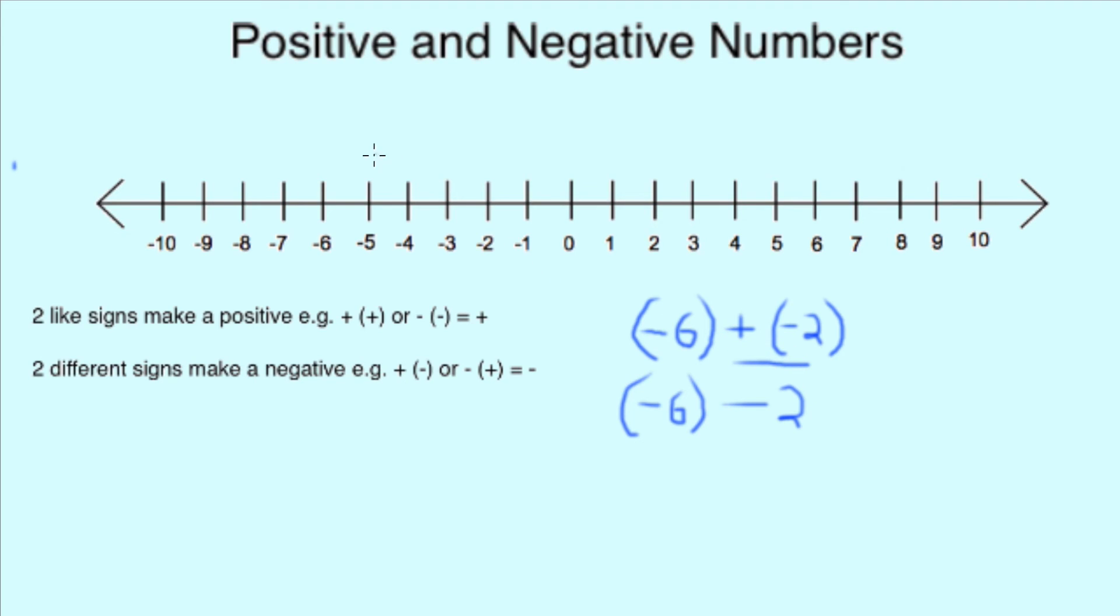So we go back up to our minus 6 on the number line and we take away 2. So 1, 2, which gives us minus 8. Because remember when minusing we go left.